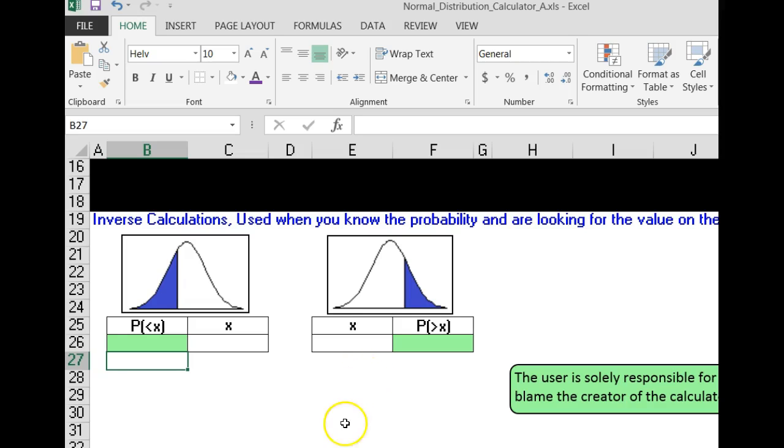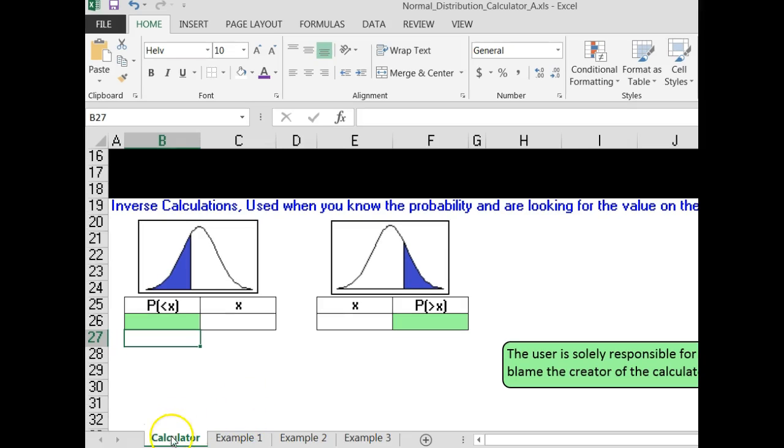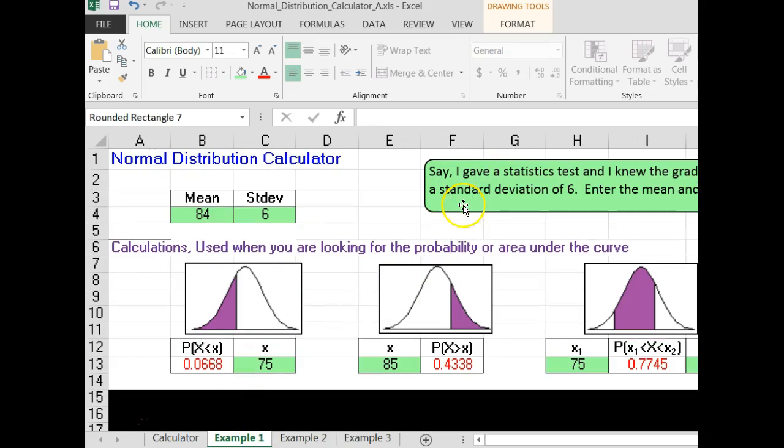Down at the bottom of the calculator, you will notice I've got three tabs. I've got examples for you. If you click example 1, I've got the verbiage over here.